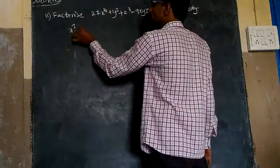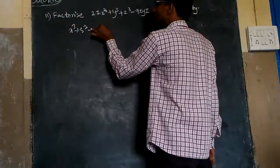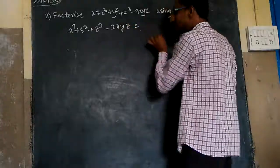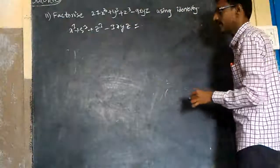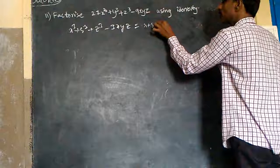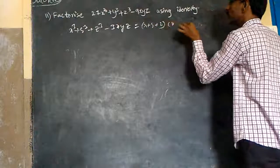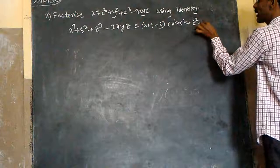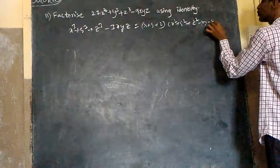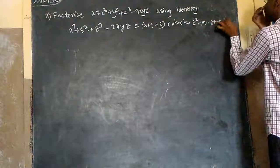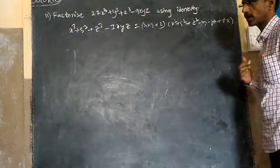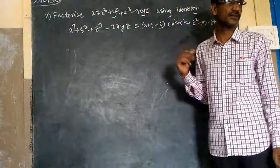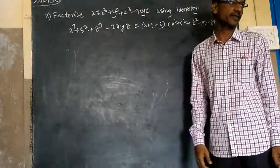This is x cube plus y cube plus z cube minus 3xyz, always equal to x plus y plus z into x square plus y square plus z square minus xy minus yz minus zx. This is a special identity and also a special product.